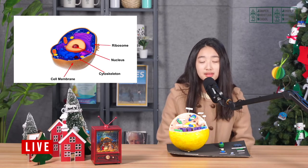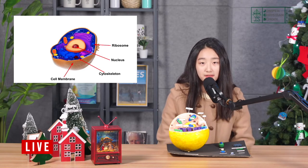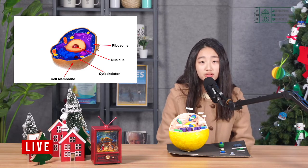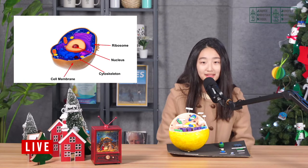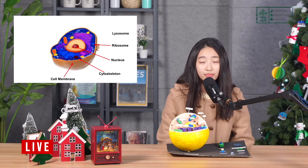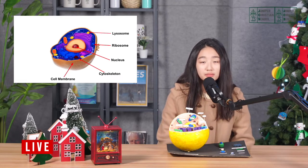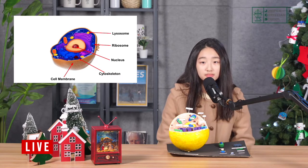Ribosome. Ribosome is the smallest organelle in the animal cell and the function of the ribosome is to make protein. Lysosome. The function of the lysosome is removing the waste of the cell.